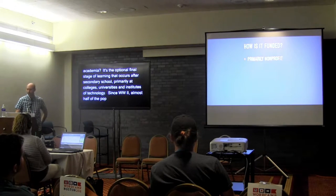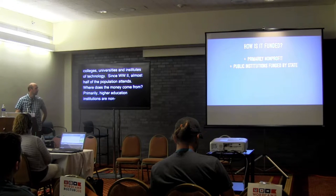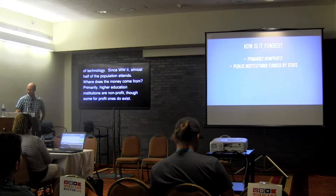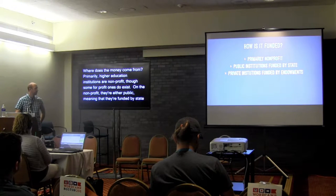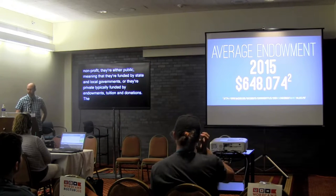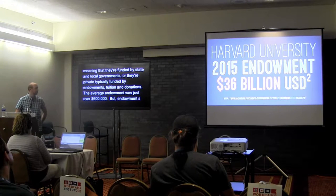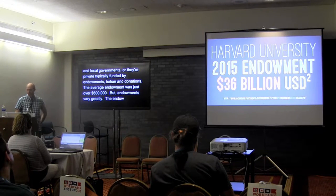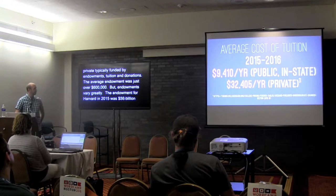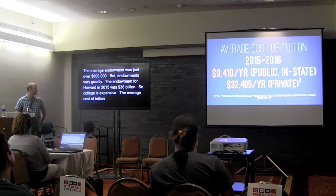Where does the money come from? Primarily, higher education institutes are non-profit, though some for-profit ones do exist. On the non-profit end, they're either public — funded by state and local governments — or private, typically funded by endowments, as well as tuition and donations. The average endowment in 2015 among private universities was just over $600,000, but endowments vary greatly by institution. To give you a sense of scale, the endowment for Harvard in 2015 was $36 billion. College is expensive: average tuition in 2015-16 was almost $10,000 a year for public, and over $32,000 for private.